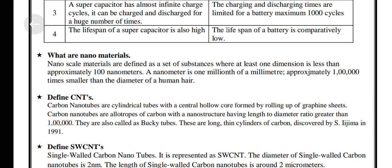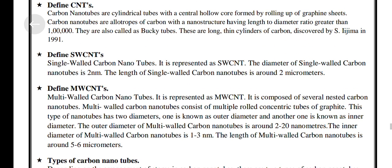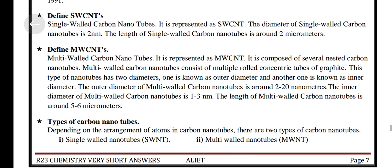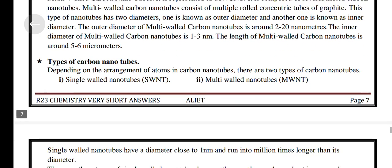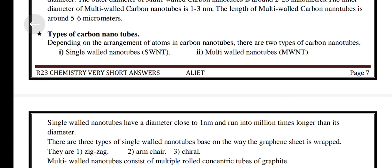What are nanomaterials? Define CNTs. Define SWCNTs (Single-Walled Carbon Nanotubes). Define MWCNTs (Multi-Walled Carbon Nanotubes). Types of Carbon Nanotubes.